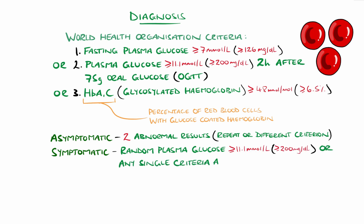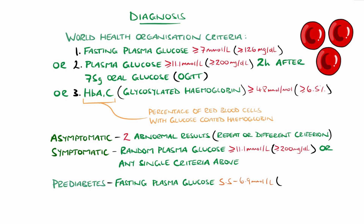A diagnosis of prediabetes, which is where blood glucose levels are persistently elevated but not enough to meet the type 2 diabetes criteria, can be made with a fasting plasma glucose of 5.5 to 6.9 mmol per litre, which is 100 to 125 mg per deciliter, or a HbA1c of 42 to 47 mmol per mole, or 6 to 6.4%.